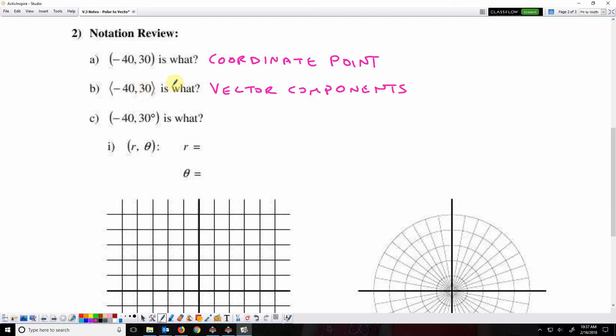So the terminal point would be at this coordinate point here, negative 40, 30, but now there's a vector that goes to that point.